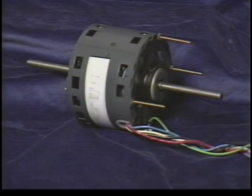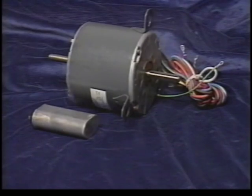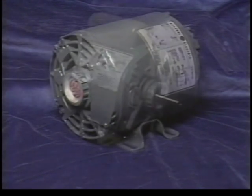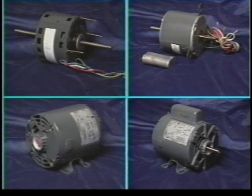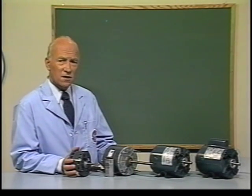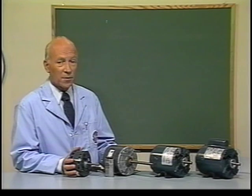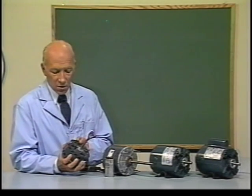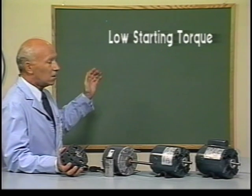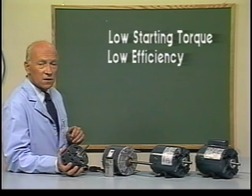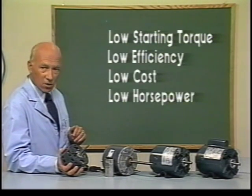We've examined these four common types of fractional horsepower AC motors: shaded pole, permanent split capacitor, split phase, and capacitor start. These motors are given their names based on the method each one uses to develop starting torque, and each of these motors has its own unique characteristics making it suitable for particular applications.